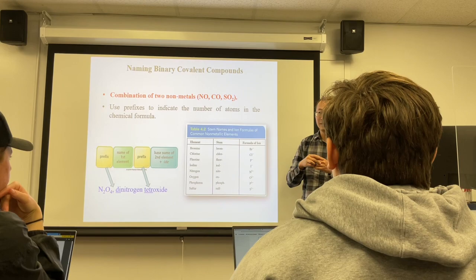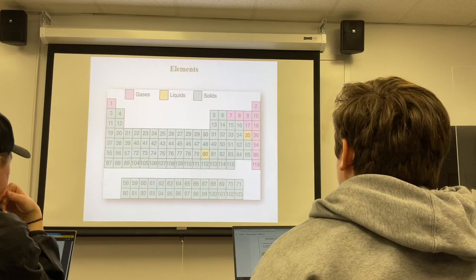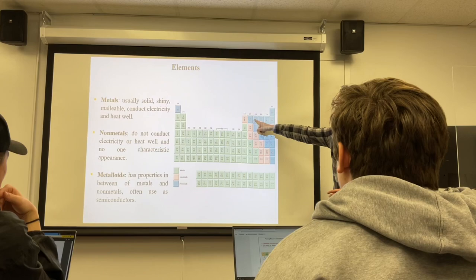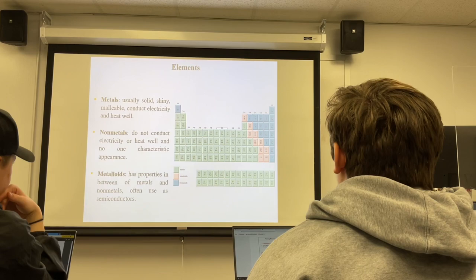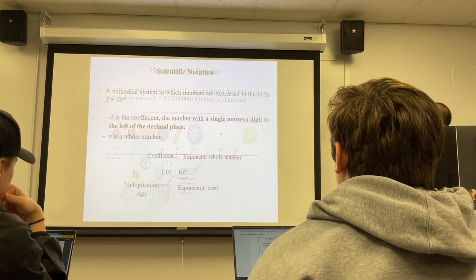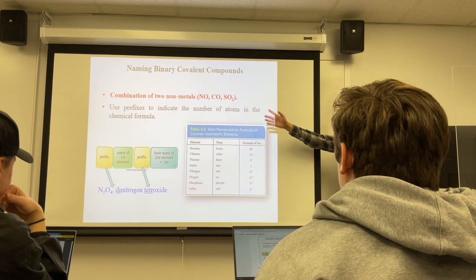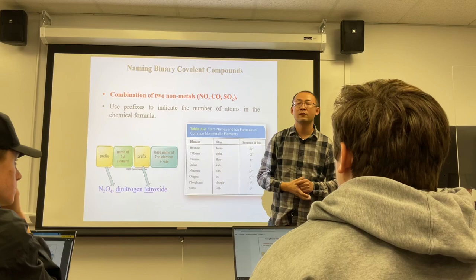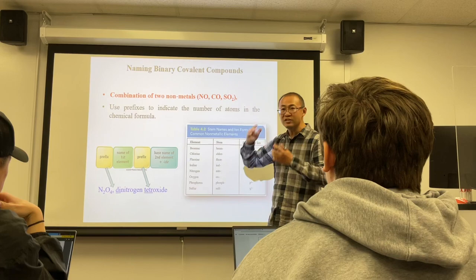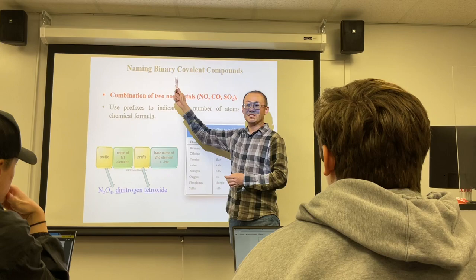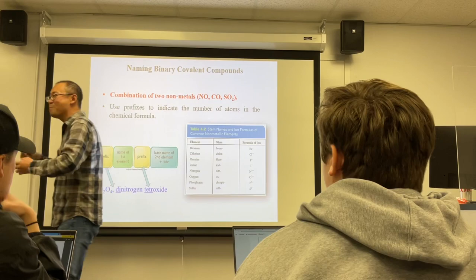Binary means two elements; covalent means two nonmetals. The rule for naming binary covalent compounds: name the first element by its regular name, change the second element to a stem name plus -ide, and add prefixes in front of each name to indicate the subscript of each element. For example, N₂O₄: nitrogen becomes 'dinitrogen' (prefix di- for 2) and oxygen becomes 'tetroxide' (prefix tetra- for 4), giving the name dinitrogen tetroxide.